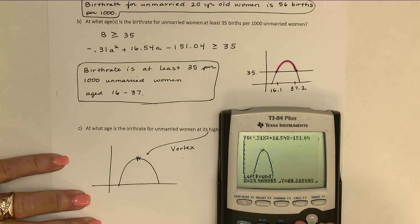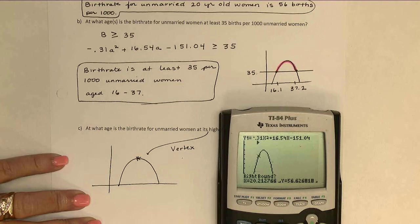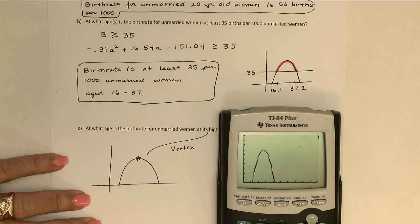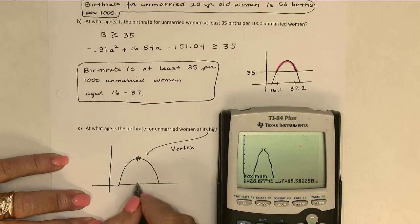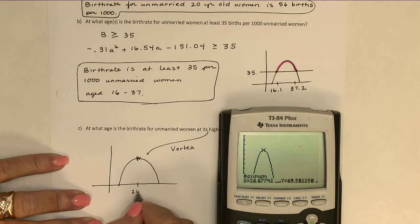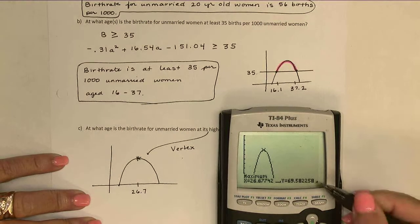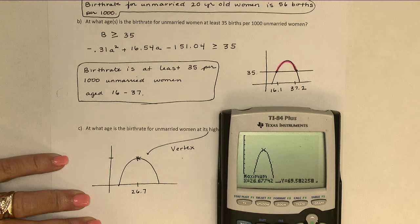And I'll have to work a little bit to get my left and right bounds here. Let's see. I'm definitely to the left of the vertex, so I'll push enter there. And then over to the right of the vertex, enter, and then just enter for the guess.